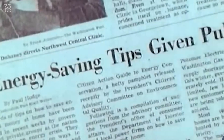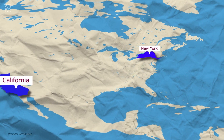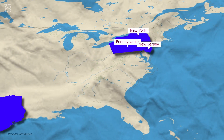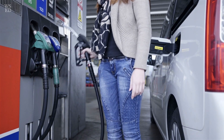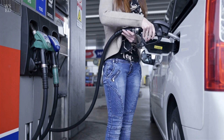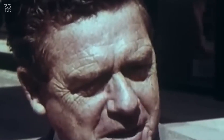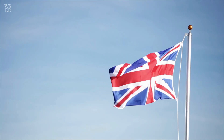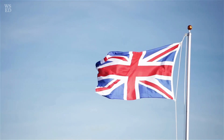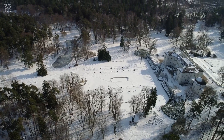Several states responded with gasoline rationing, including California, New York, Pennsylvania, Texas, and New Jersey. In these densely populated states, consumers could only buy gasoline on alternate days, depending on whether the last digit of their license plates was even or odd. The gasoline shortage also led to concerns that there might not be enough heating oil in the winter, a prospect particularly worrying for the New England states, where demand for domestic heating fuel was the highest.